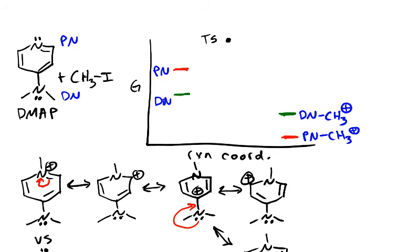We'll go ahead and connect the dots and draw our actual reaction pathway. Starting with the DN starting material, we go up through our transition state and come down to our methylated charged product. Doing the same thing, starting at the higher energy PN starting material, we go through our similar transition state, coming down to our charged product that's more stable. Now by relating the differences in the delta Gs, we can see which pathway would be more favorable thermodynamically.